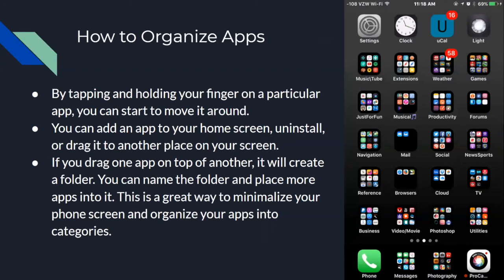How to organize your apps on a smartphone: by tapping and holding your finger on a particular app, you can start to move it around to where you like on the screen. You can add an app to your home screen, uninstall it, or drag it to another place on your screen. If you drag one app on top of another, it'll actually create a folder. You can name the folder and place more apps into it — it's a great way to minimize your phone screen and organize your apps into categories.